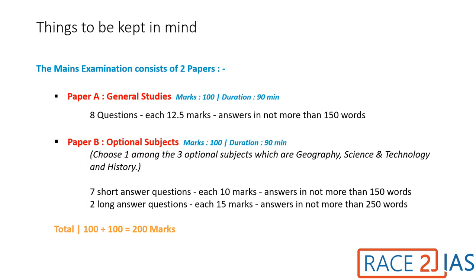Let's begin with the exam pattern, which is similar for all student categories. The main exam consists of two papers: Paper A — General Studies, and Paper B — Optional Subject. Paper A, General Studies, consists of eight questions carrying 12.5 marks each, to be answered in not more than 150 words each.